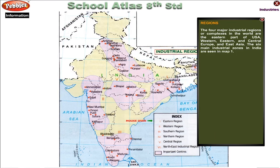The four major industrial regions or complexes in the world are the eastern part of the USA, Western, Eastern and Central Europe, and East Asia. The six main industrial zones in India are seen in Map 1.